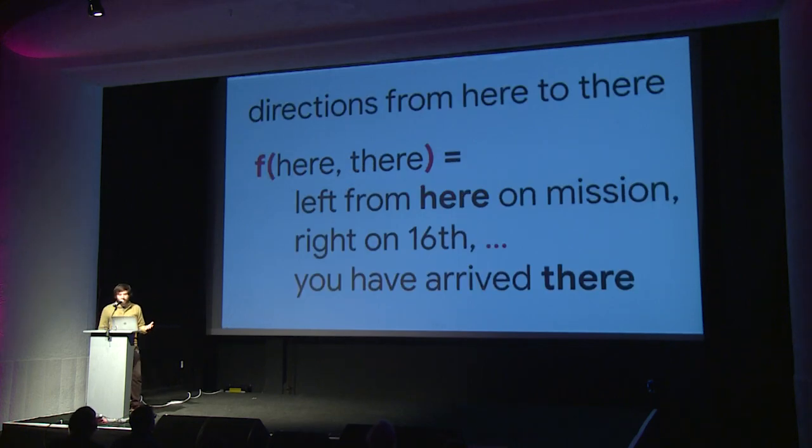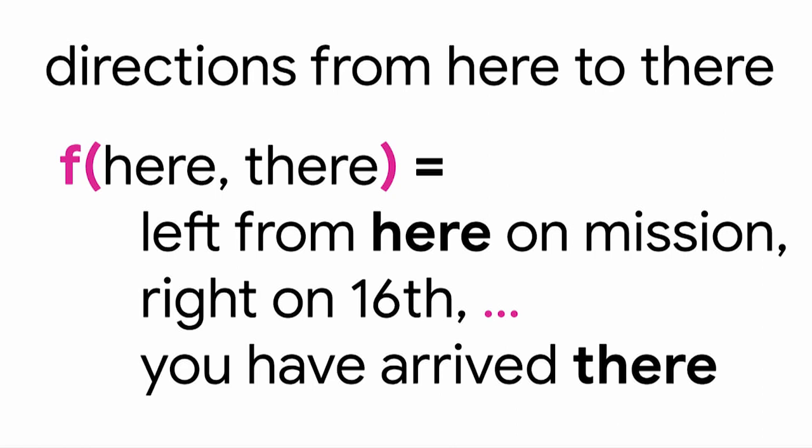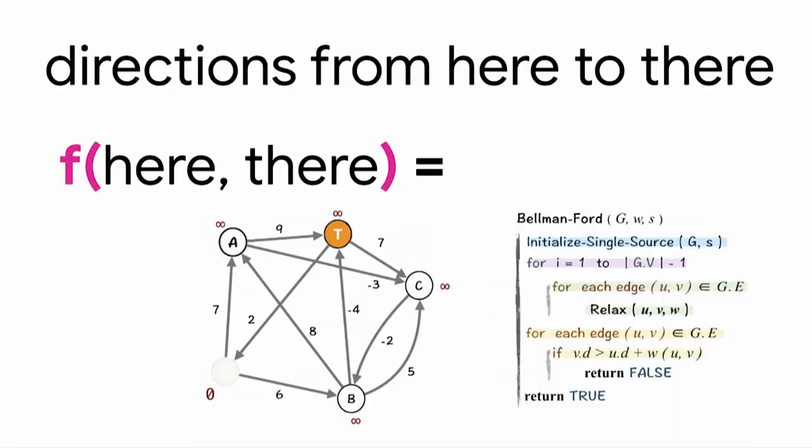Here's a slightly more complicated function. If I wanted to give a function two points and say get me from here to there in the shortest way possible — we do this pretty much every day in Google Maps — this might not seem at first to be a function, but it is. It's an algorithm that solves this problem for you. You learn this in undergrad computer science; it's called Bellman-Ford, and you follow certain steps and it's guaranteed to give you the path from point A to point B in the shortest distance possible.